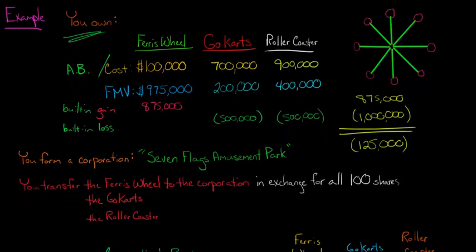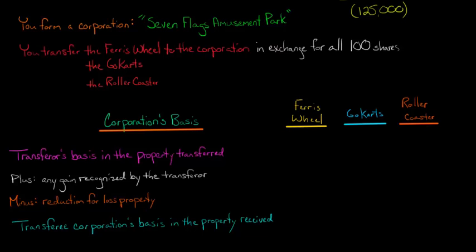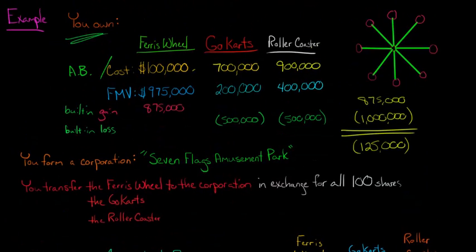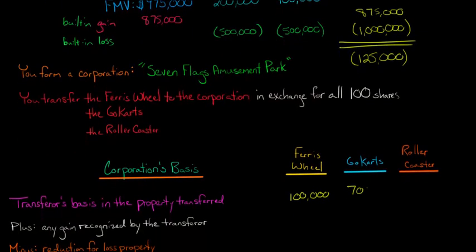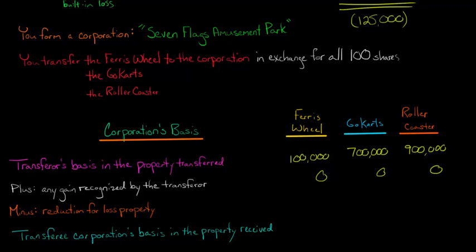Let's go back to how we generally calculate a corporation's basis in assets received. As discussed in the previous video, you start with the transferor's basis in the property transferred — $100,000 for the Ferris wheel, $700,000 for the go-karts, and $900,000 for the roller coaster. Think of that as a carryover basis. We'd normally add any gain recognized, but there's none here. Now we have to subtract a reduction for loss property — we're reducing the basis in the corporation's assets by the $125,000 aggregate built-in loss.